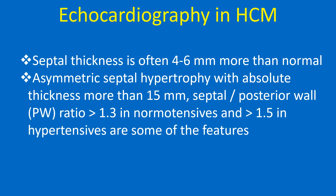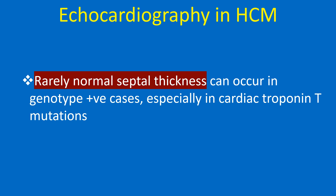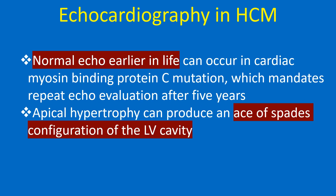Asymmetric septal hypertrophy with absolute thickness more than 15 mm, septal-to-posterior wall ratio more than 1.3 in normotensives and more than 1.5 in hypertensives are some of the features. Rarely, normal septal thickness can occur in genotype-positive cases, especially in cardiac troponin T mutations. Normal echo earlier in life can occur in cardiac myosin binding protein C mutation, which mandates repeat echo evaluation after 5 years.